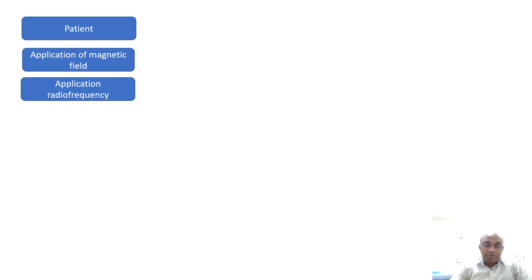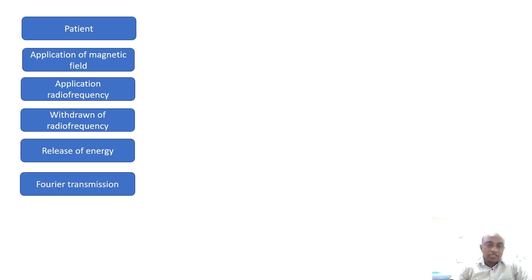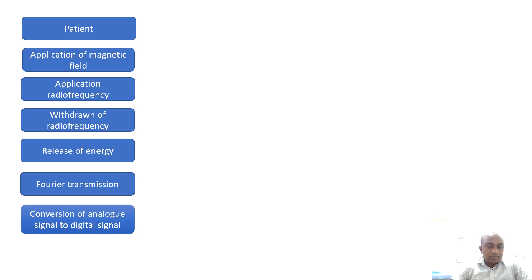Let us see what events happen in MRI. When the patient is introduced into the bore, there is application of a magnetic field, then application of radio frequency. When the radio frequency is withdrawn, there is a release of energy. This release of energy undergoes Fourier transformation and conversion of analog signal to digital signal, then the digital signal is converted to an MRI image.